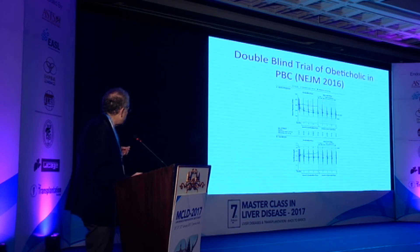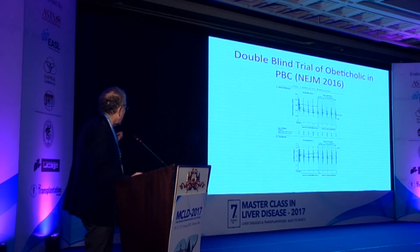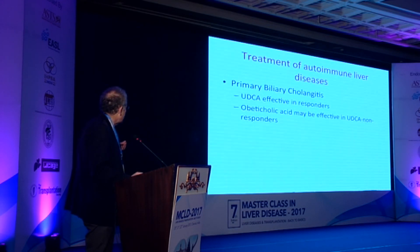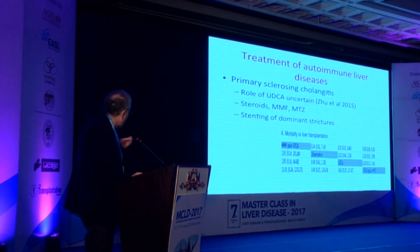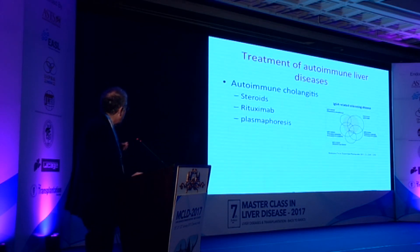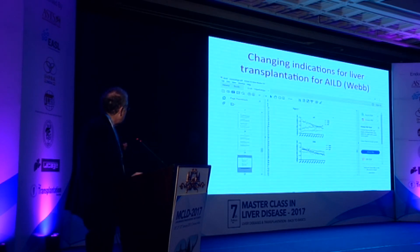A double-blind trial showed that OCA does improve biochemistry, and when you stop it, the chemistry reverts. The main drawback with OCA is its risk of itching — it does result in increased itching in a significant number of patients. So URSO is initial treatment, and OCA is for non-responders. I'm not going to discuss PSC as that will be covered separately. Autoimmune cholangitis is again treated with immunosuppression.